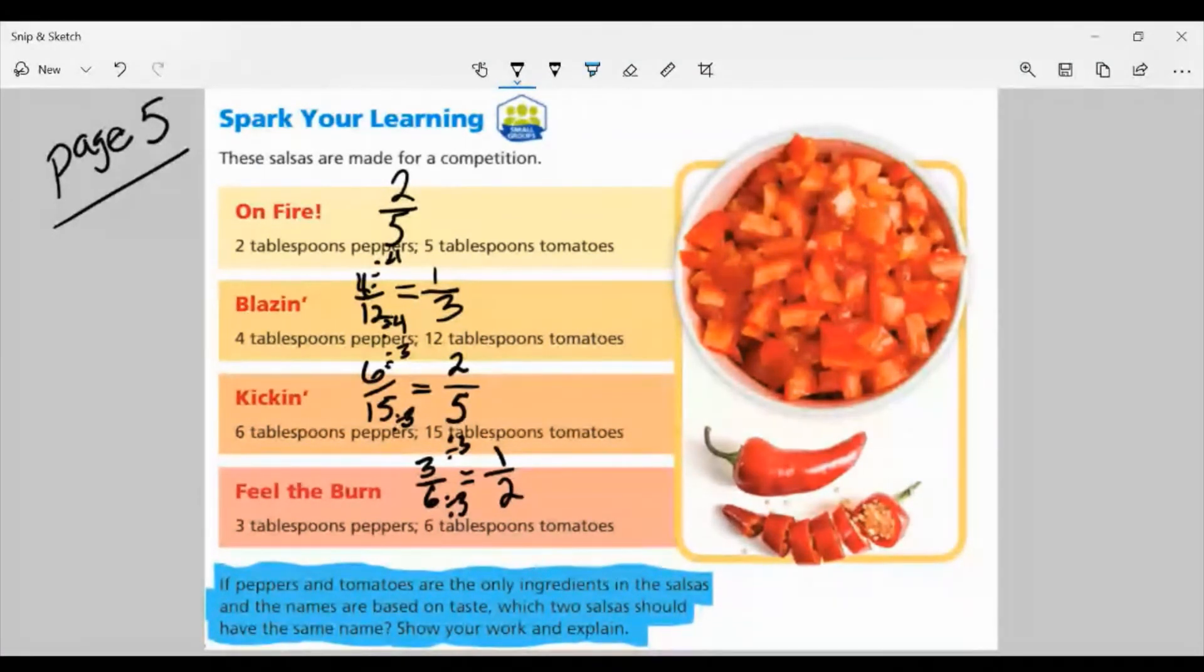So now we have our new values, right? Two to five, one to three, two to five, and one to two. Now, which two salsas should have the same name? On fire and kicking, right? Because they both have the same unit rate of two tablespoons of peppers to five tablespoons of tomatoes. They're both equivalent. So technically, both of these are the same. There's no difference. Now, what about fill the burn and blazing? Different values, right? One third, one half, or one to three and one to two. Those are different than two to five. So this is how we can prove it and show our work. We found the equivalent ratio for six to 15, which was two to five. And that's the same as on fire.